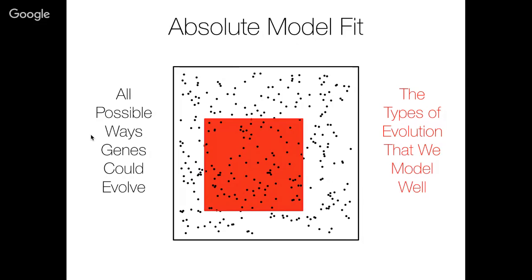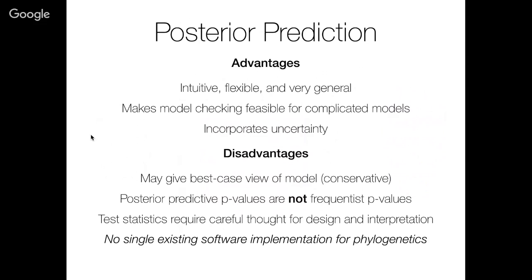The other approach is to say: given a set of models we have available — say the models we typically use for phylogenetic analysis — can we know when we're doing well? Can we determine when we're inside the red box or not inside the red box? This is where assessments of absolute model fit come in. Parametric bootstrapping and posterior prediction for phylogenetics are the kinds of techniques that can help us answer whether, for a particular gene, we think we're doing a good job of modeling its dynamics. My lab tends to work in a Bayesian framework, so we've primarily focused on posterior prediction.